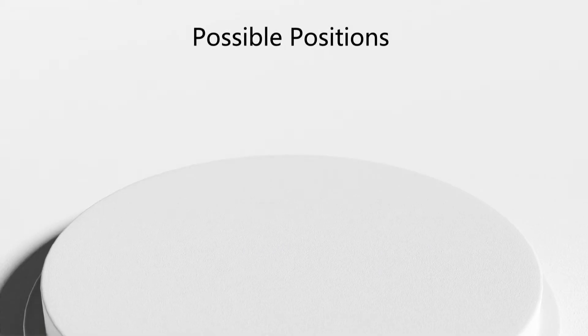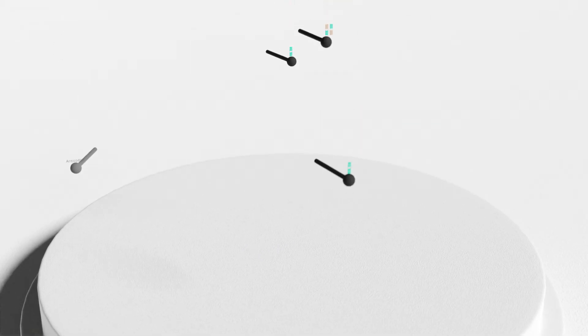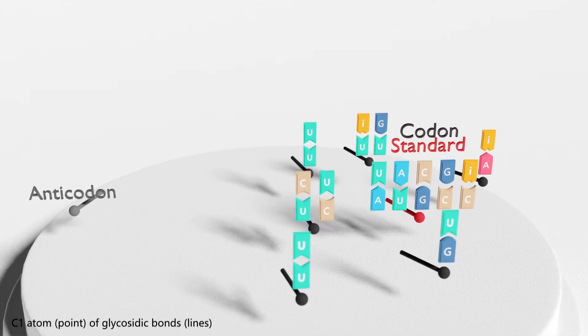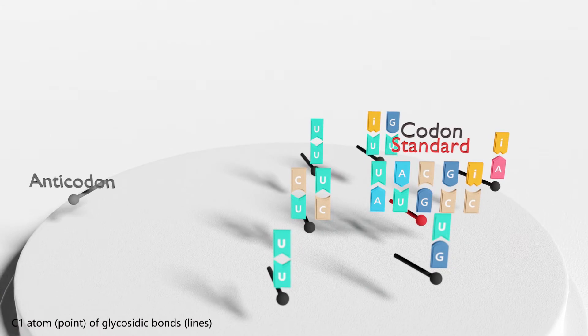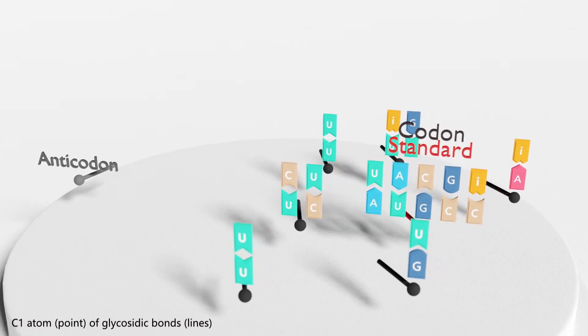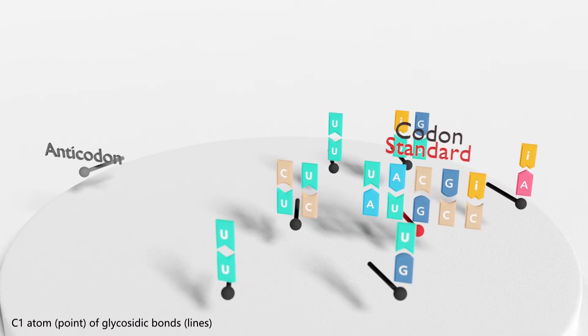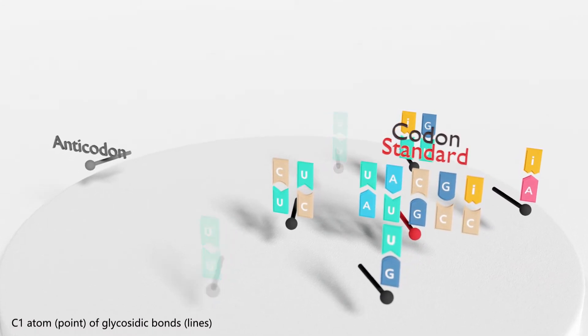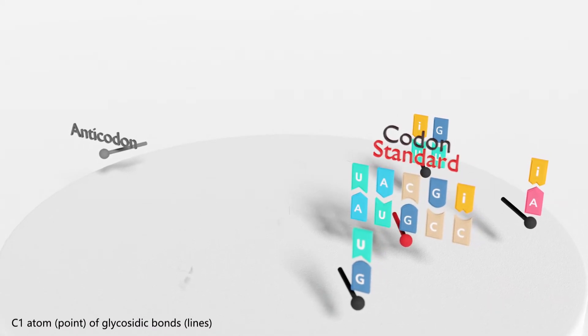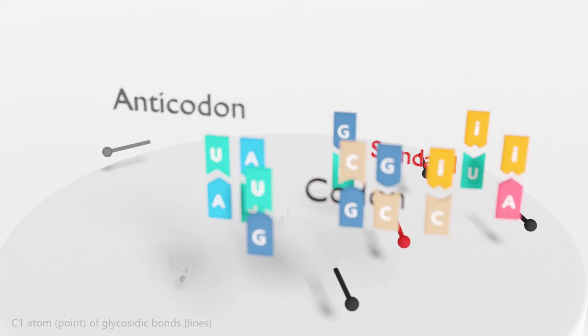Crick then evaluated possible codon-anticodon positions needed to enable these interactions, finding seven in total, although noting all seven are unlikely considering geometrical constraints during transcription. He then disqualified any pairings which went against the general features of the code, such as enabling multiple amino acids to be encoded by one codon. This left a total of four positions, including that of standard base pairing, and so six total combinations.